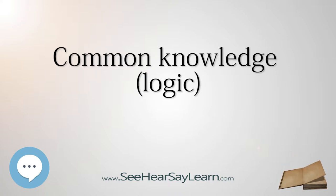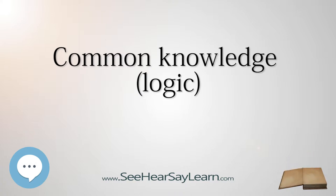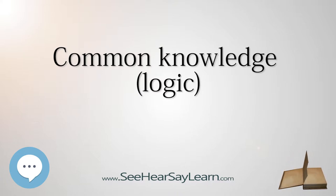The answer is that on the Kth dawn after the announcement, all the blue-eyed people will leave the island. The solution can be seen with an inductive argument. If K equals 1, that is, there is exactly one blue-eyed person, that person will recognize that they alone have blue eyes by seeing only green eyes in the others, and leave at the first dawn.